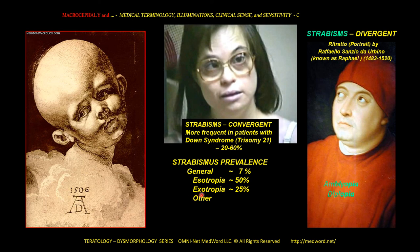Occasionally, about 25 percent of strabismus cases are outward, or exo — strabismus divergent. Here is a portrait by a very famous painter, and this cardinal suffers from either amblyopia, which is a deficit of vision, or diplopia, which is double vision. Amblyopia is when the brain shuts off one of the two eyes, because otherwise you get double vision.